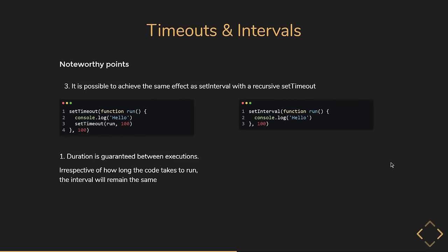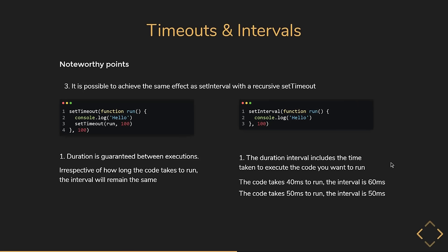setInterval works differently — the duration interval includes the time taken to execute the code. So if the code takes 40 milliseconds to run, the interval is only 60 milliseconds. If your code can take longer to run than the interval itself, it's always better to go with recursive setTimeout rather than setInterval to keep the time interval constant between executions regardless of how long the code takes, and to avoid errors.